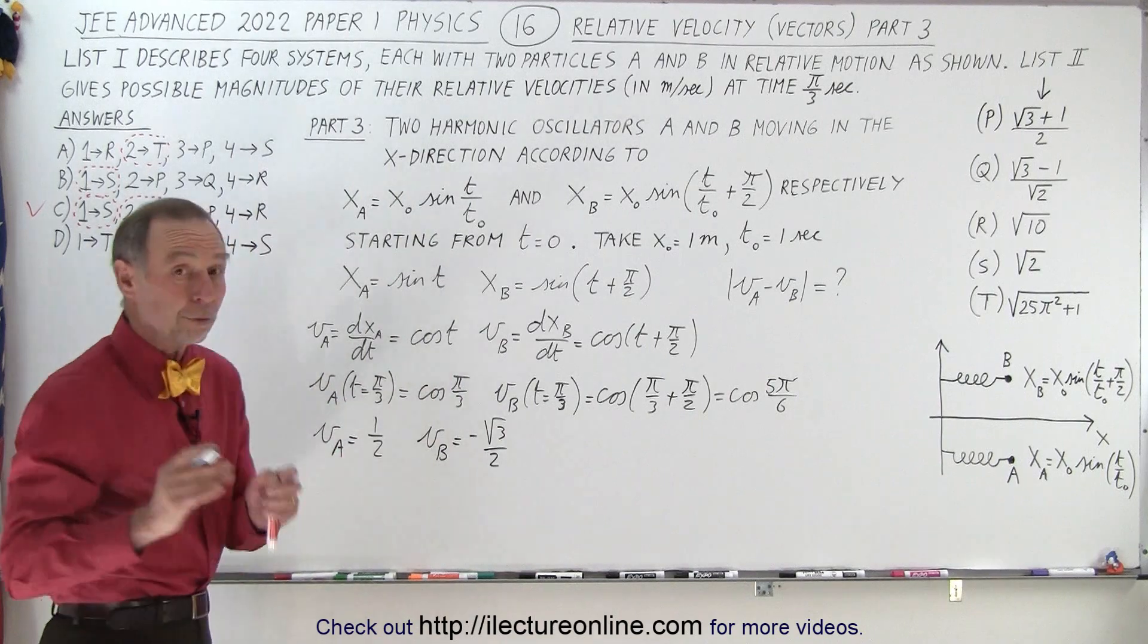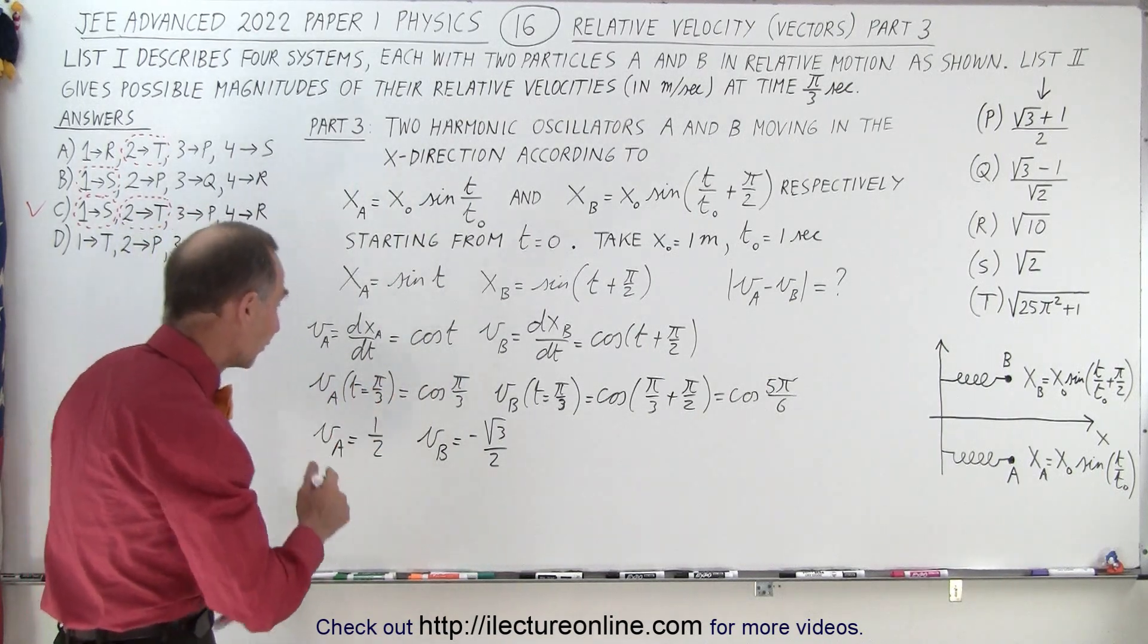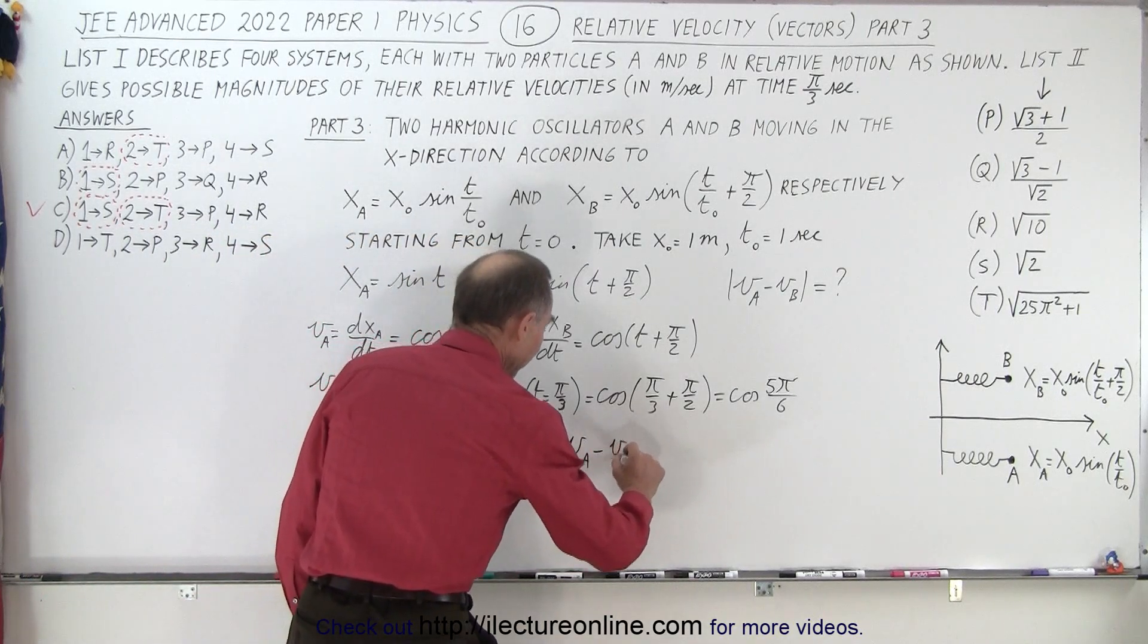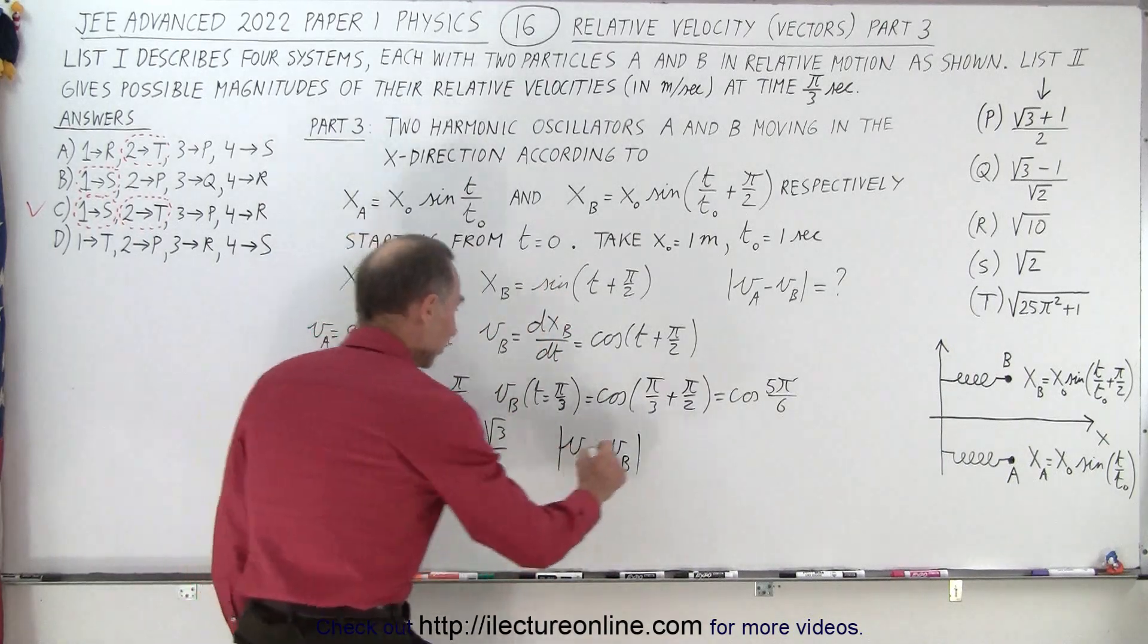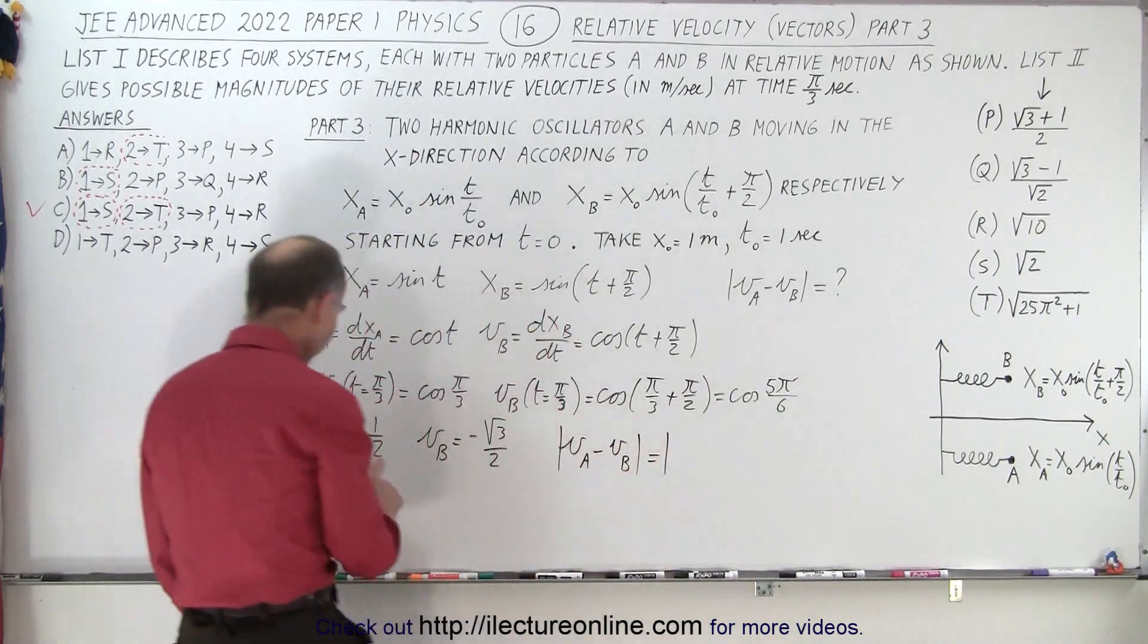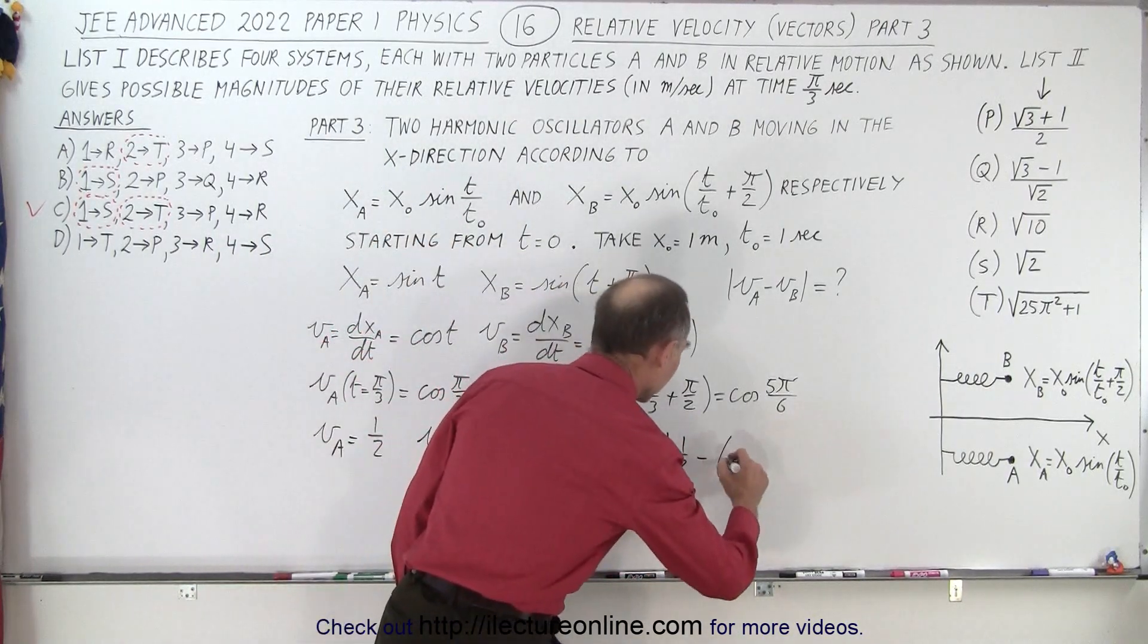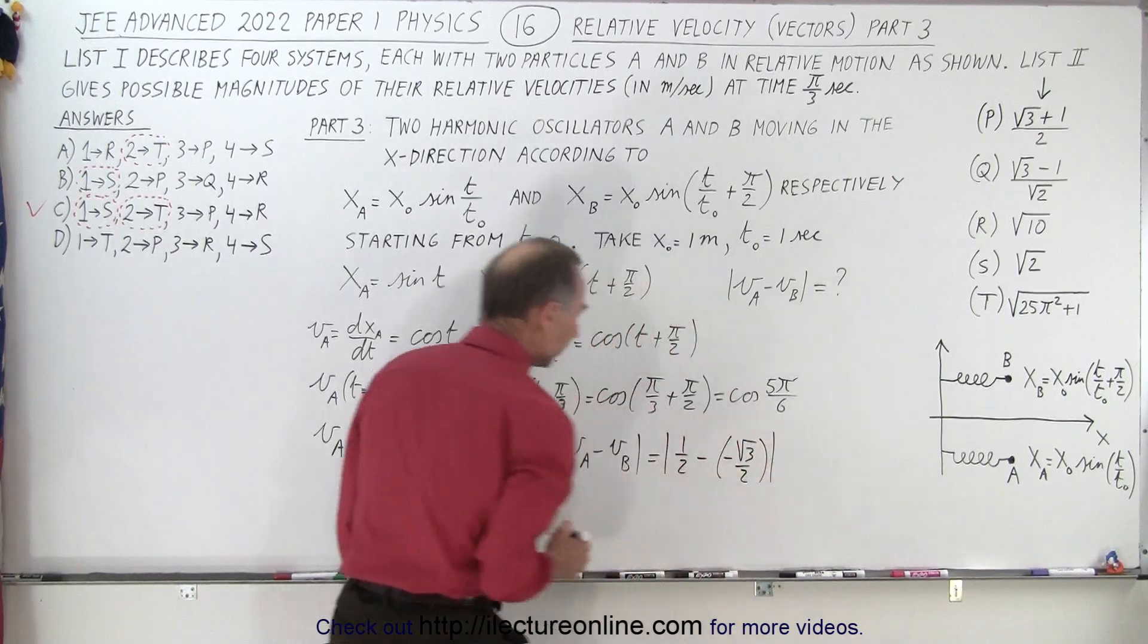All right, so now, remember, we want to find the magnitude of the difference of those two velocities. So we're looking for v a minus v b, and of course, we want the magnitude of that. And so this is equal to the magnitude of v a, which is one-half, minus a minus square root of three over two.